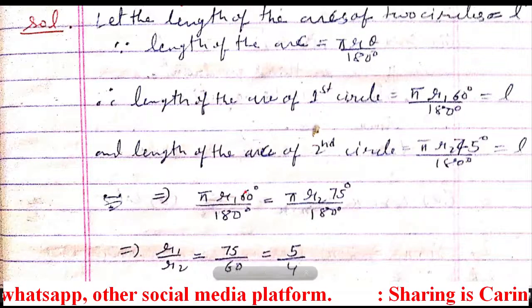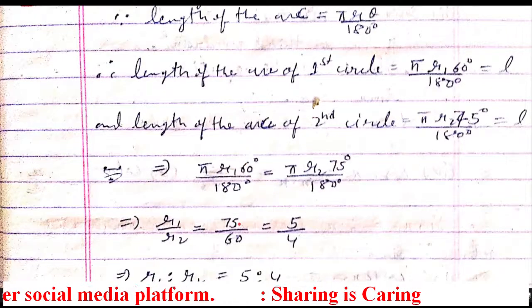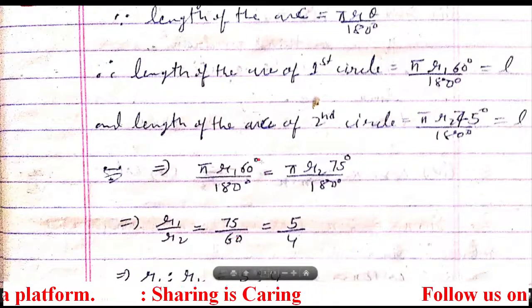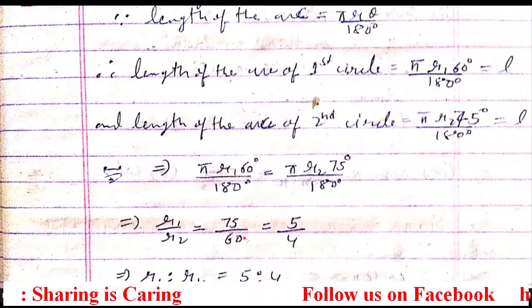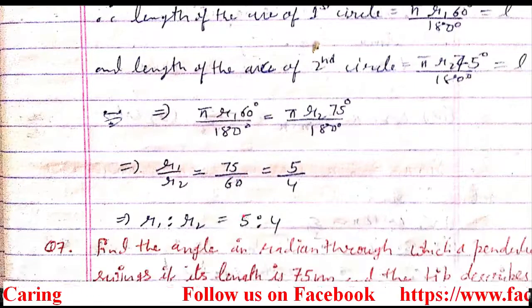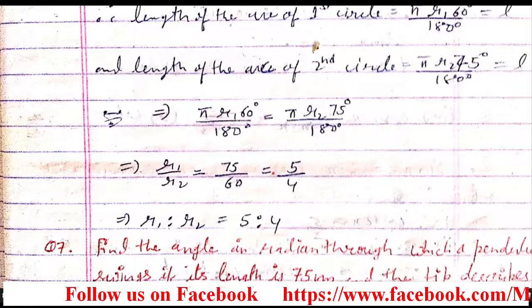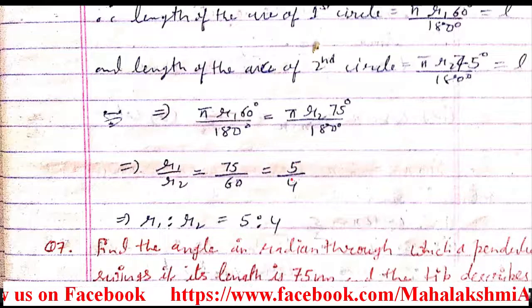So this r₂ I shifted here, this 60 I shifted there. So it is going to be 75/60. Now, since both have degrees, degree and degree will also cancel. Now just cancel them by 15, you will obtain 5/4. So ratio of r₁ and r₂ is 5:4.